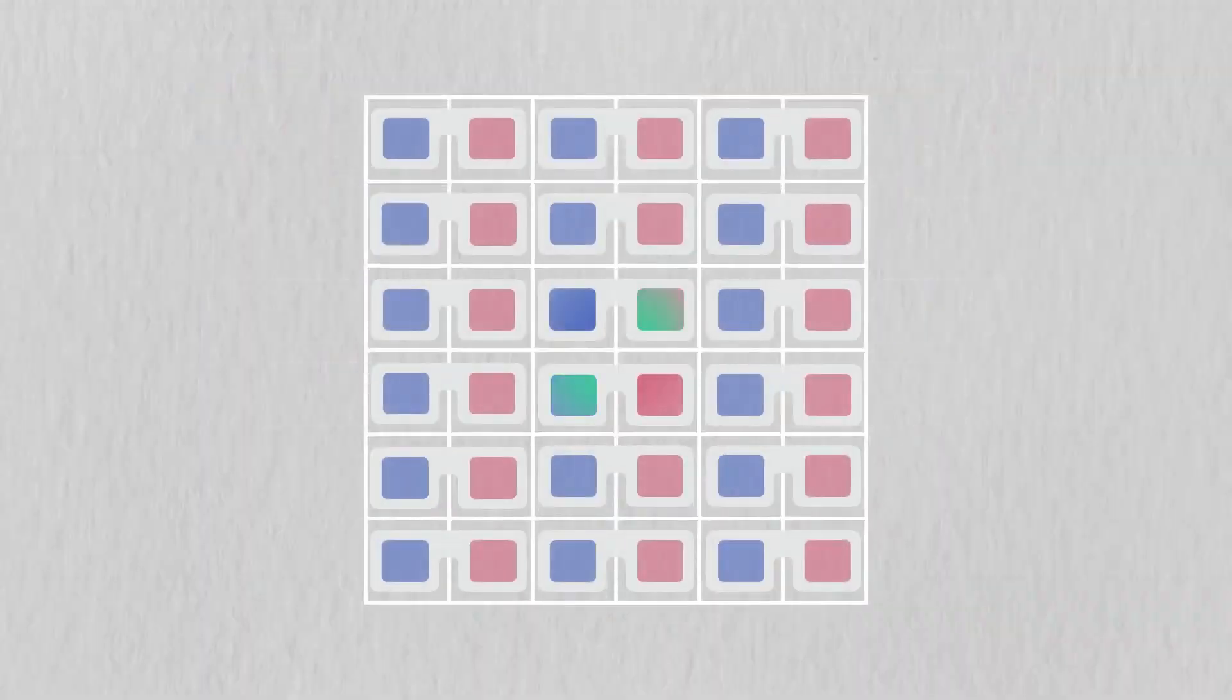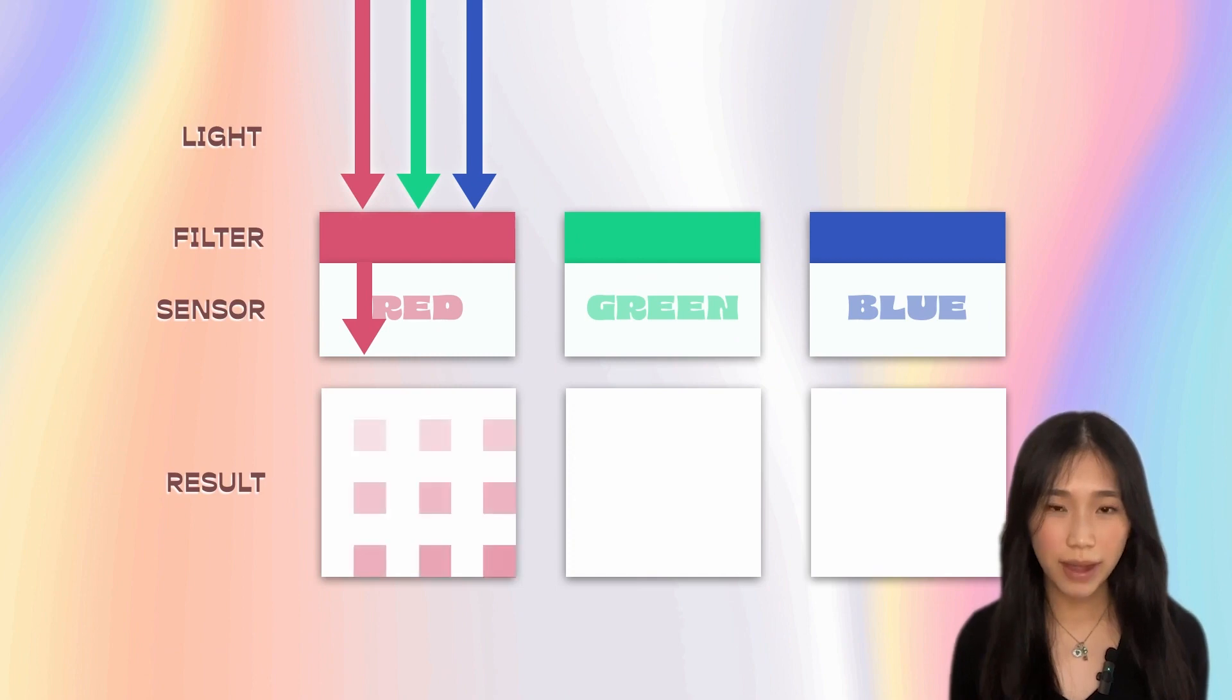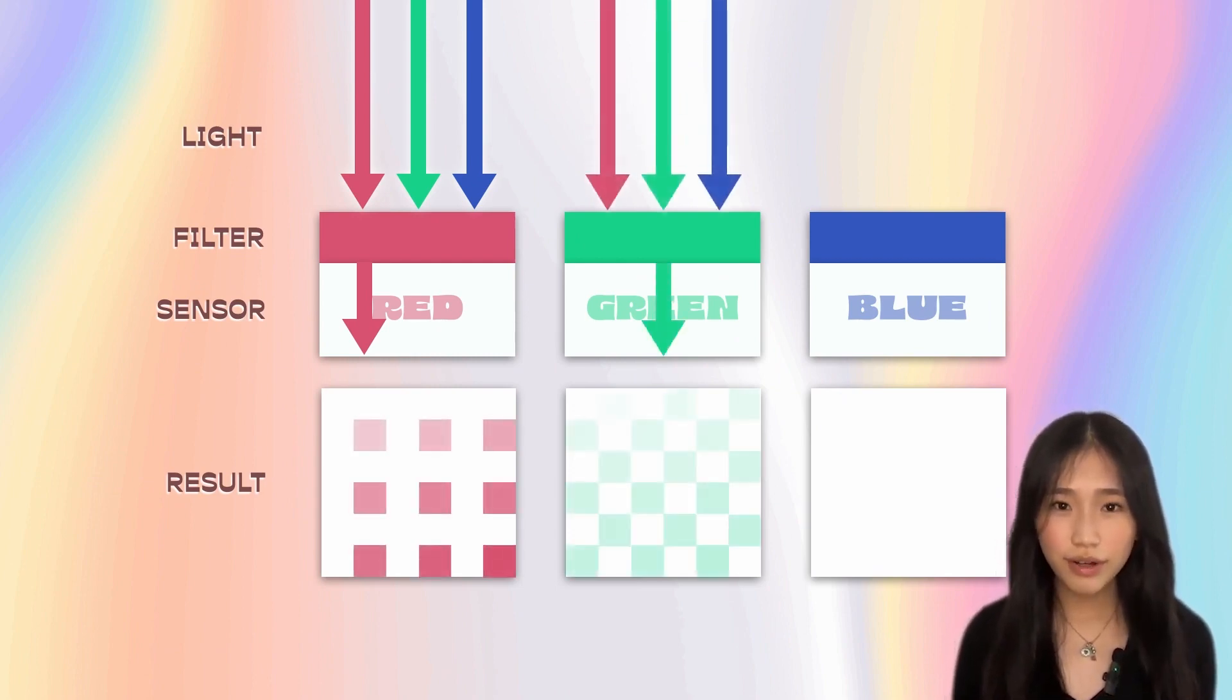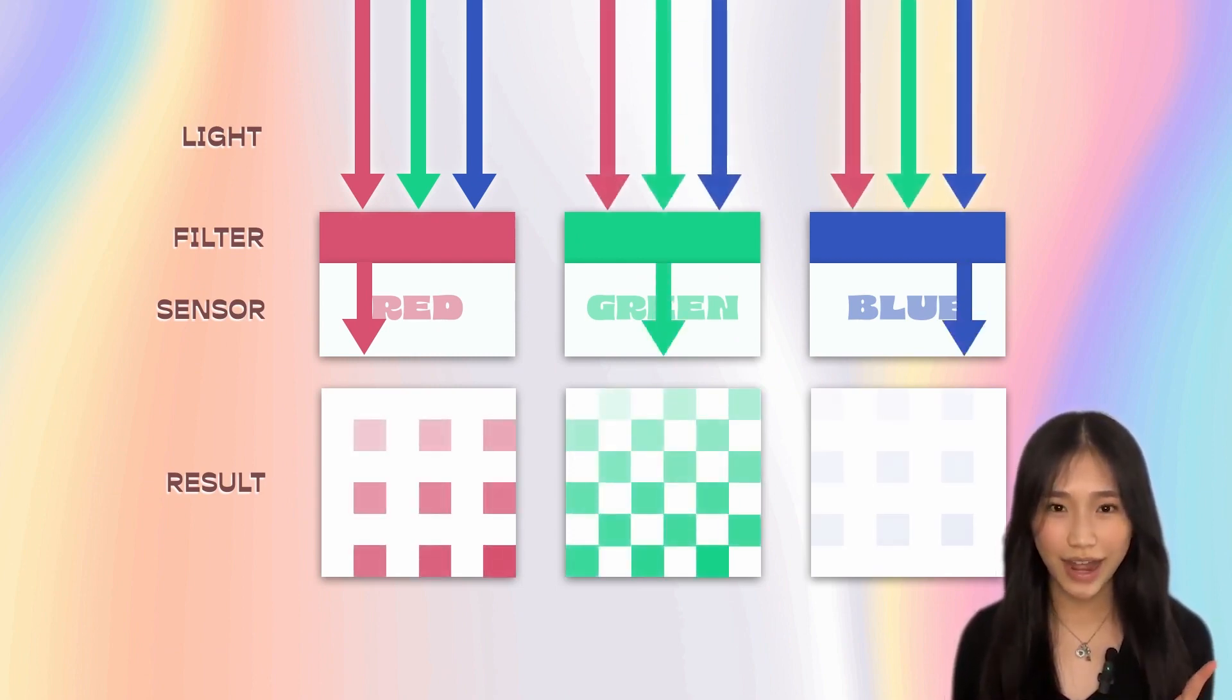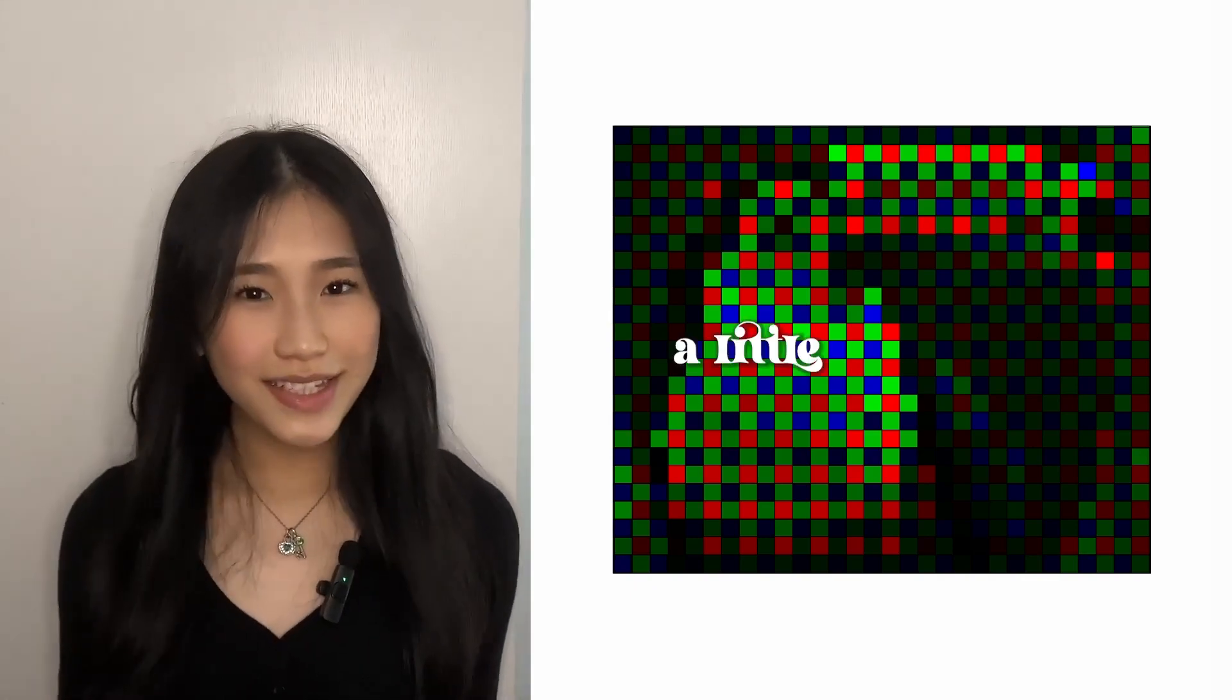Our photos have color, all thanks to color filter arrays. They're like these movie glasses, but with red, green, and blue filters in the Bayer pattern. Only the matching wavelengths of light pass through, so the sensor only records the intensity of one color at each pixel. But this looks a little bit strange.